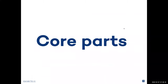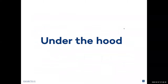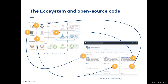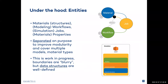Next I'd like to speak about the core parts of the platform and explain what is under the hood. If you look at the picture demonstrated at the beginning, there are multiple components also reflected on our GitHub page — repositories that represent these data standards, the applications, the extractors — all available in the open source GitHub community. What's important to understand is that we really focus on identifying the different entities we work with, like materials, workflows, and jobs, and we separate them on purpose to improve modularity and cover multiple different models and material types.